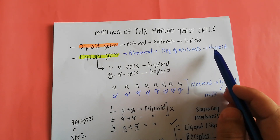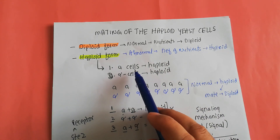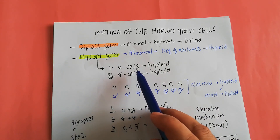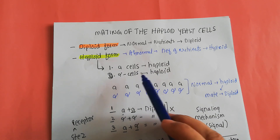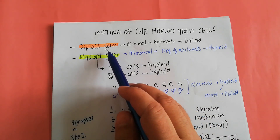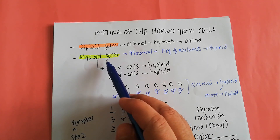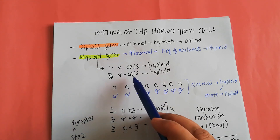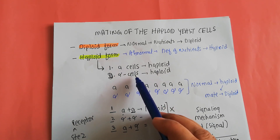In these haploid cells, there are two forms: one is known as the A cell and the other is known as the alpha cell. During abnormal conditions, the diploid form of yeast moves towards the haploid form, producing two kinds of haploid cells: A cells and alpha cells.